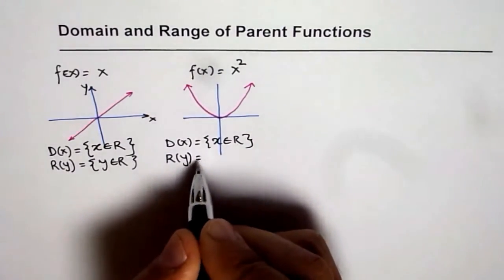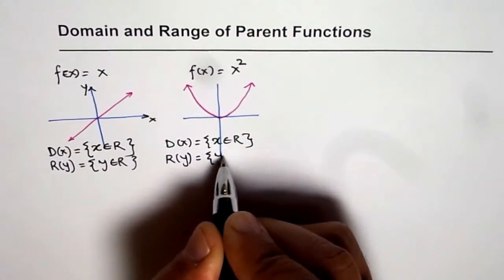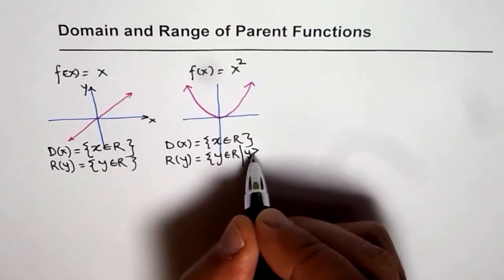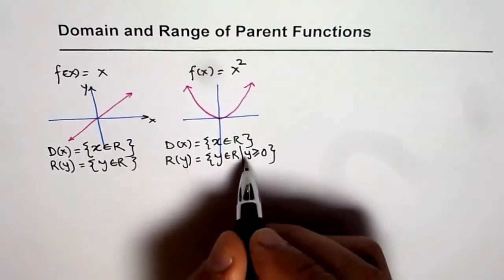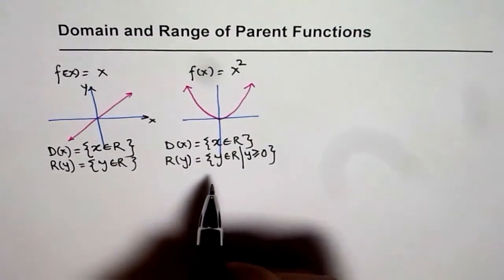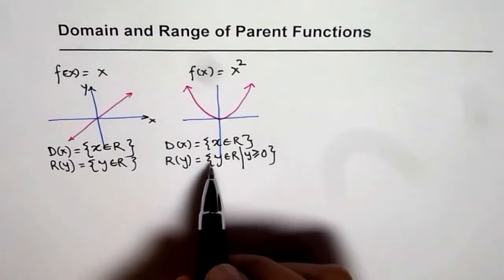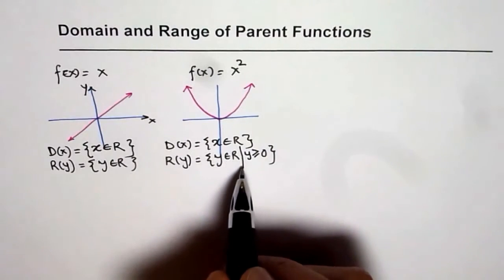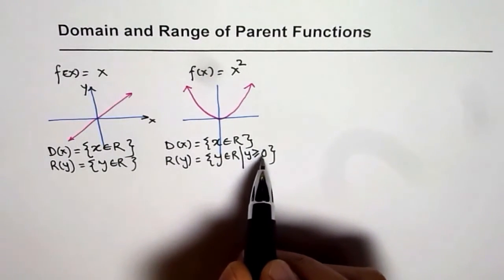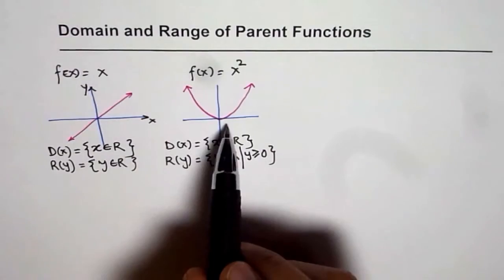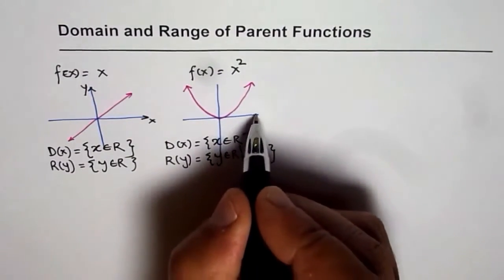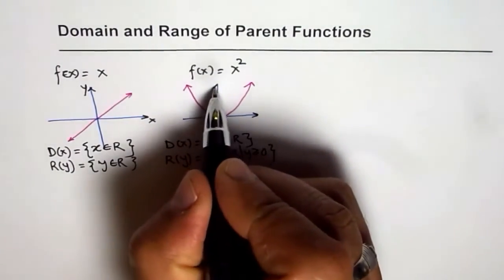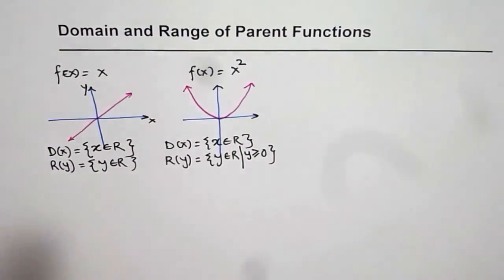However, range is restricted. Range is y belongs to real numbers, but y is greater than or equal to 0. This condition means we read the range as: set of real numbers, y belongs to real numbers, such that y is greater than or equal to 0. So in this case, domain is not restricted — you can have any value for x — but the output is restricted. It is non-negative.